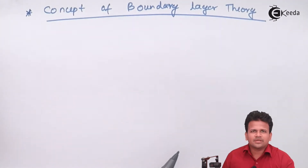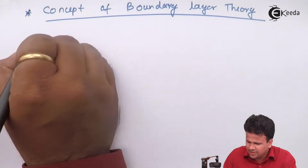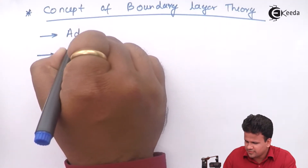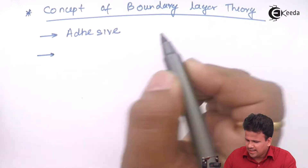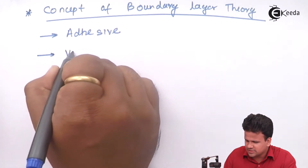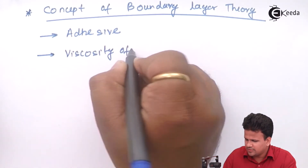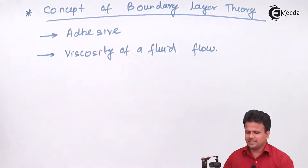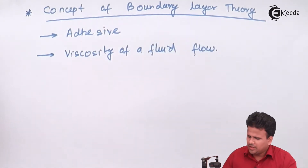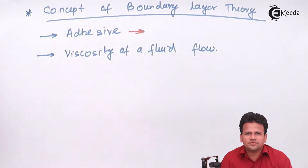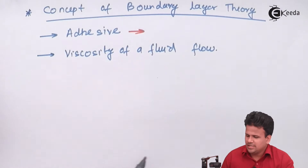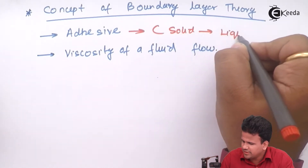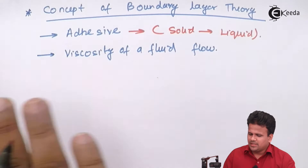Now let us study what is a boundary layer. To understand a boundary layer, we have to combine two concepts: first, the concept of adhesive force, and second, the concept of viscosity of a fluid flow. Adhesive force is a force between two different molecules.